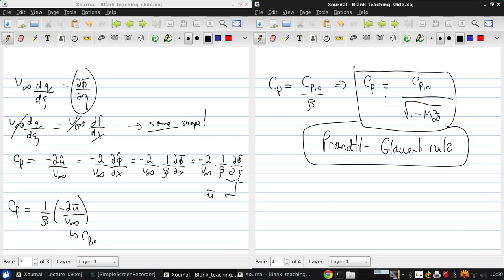So now if we think about what the impact of this rule is for lift and moment coefficients, we can see that actually it's quite simple. Because the same relationship must hold since cl and cm, the lift and moment coefficients per unit span, are both obtained from integrations of the pressure coefficient.